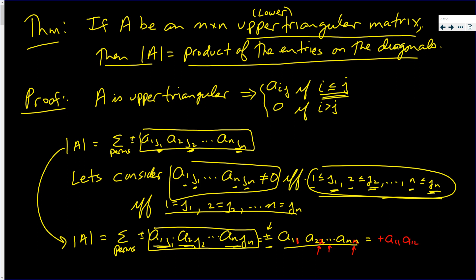So it does turn out that if you have an upper triangular or lower triangular matrix, the determinant of A equals the product of the entries on the diagonal elements of A. That's all we needed to show. That completes the proof.